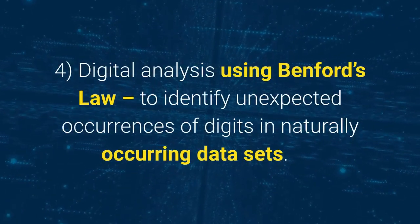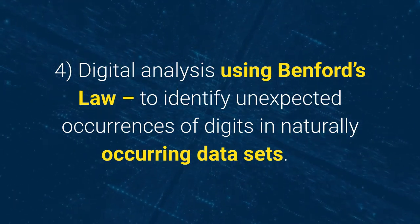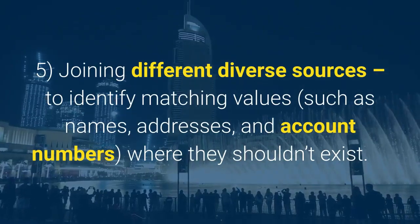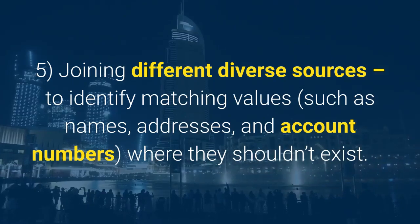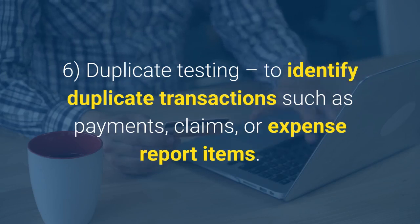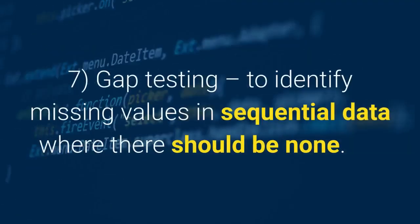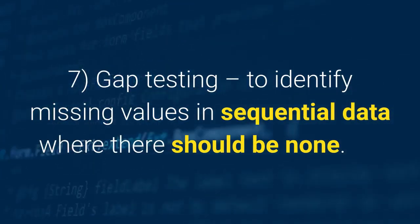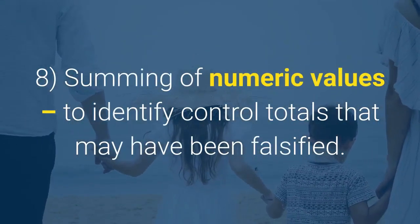Four: digital analysis using Benford's Law to identify unexpected occurrences of digits in naturally occurring datasets. Five: joining different diverse sources to identify matching values such as names, addresses, and account numbers where they shouldn't exist. Six: duplicate testing to identify duplicate transactions such as payments, claims, or expense report items. Seven: gap testing to identify missing values in sequential data where there should be none.